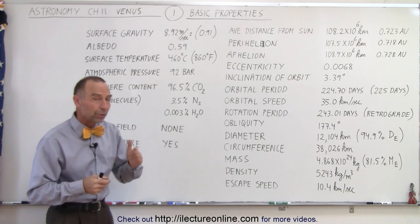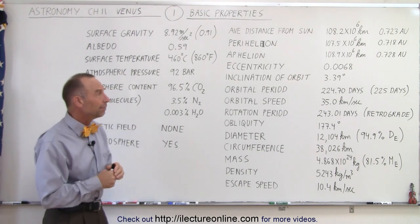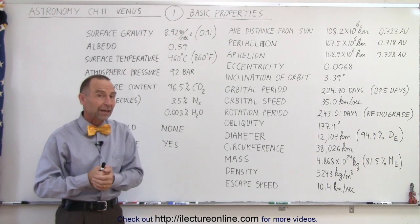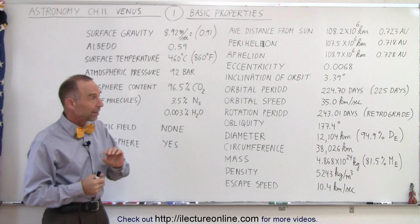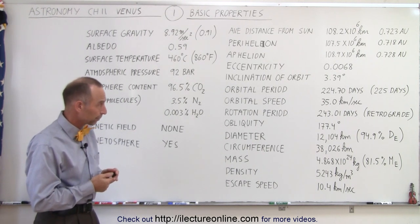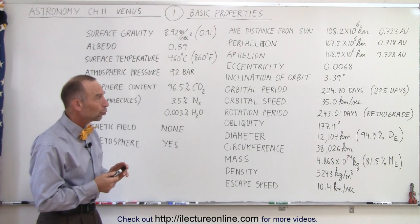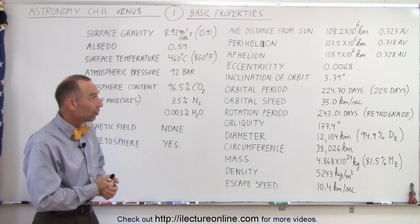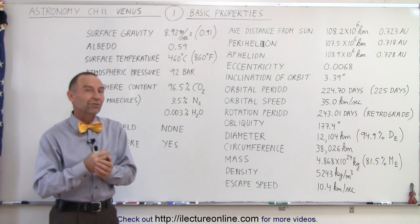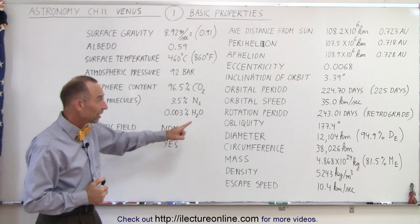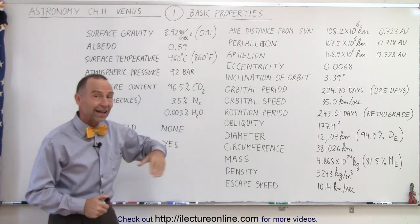The inclination of the orbit relative to the ecliptic plane is 3.39 degrees. As a planet is concerned, that's quite a bit. The orbital period is 224.7 days, we'll just call it 225 days. So it takes 225 days for Venus to make it around the Sun once.